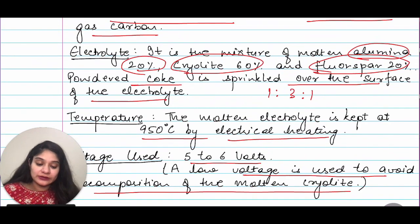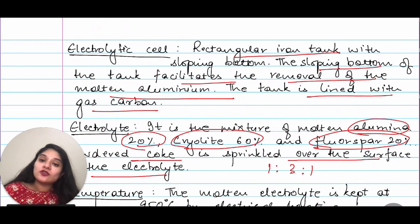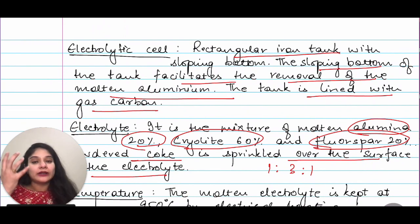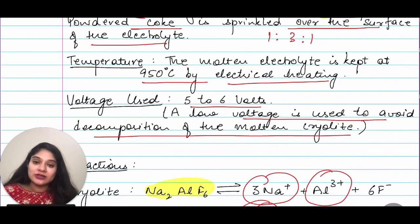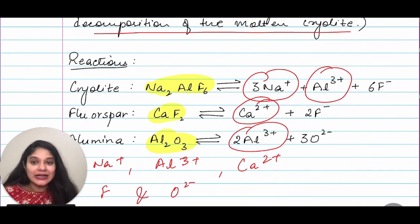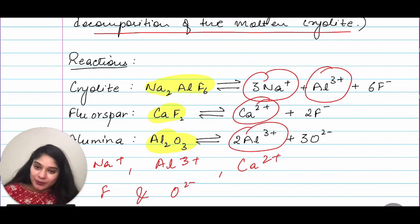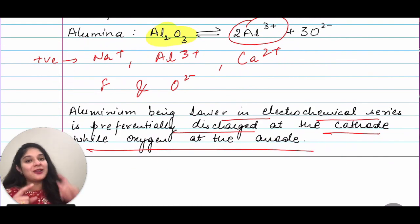So far we understand: the apparatus has an electrolyte, carbon lining, cathode, anode, and molten aluminum being collected. The electrolytic cell is a rectangular iron tank lined with carbon. The electrolyte is a mixture of alumina, cryolite, and fluorspar in ratio 1:3:1. Temperature is maintained at 950 degrees Celsius. Low voltage is used to avoid decomposition of cryolite. Cryolite, fluorspar, and alumina all dissociate — we identified which ions go to cathode and which go to anode.